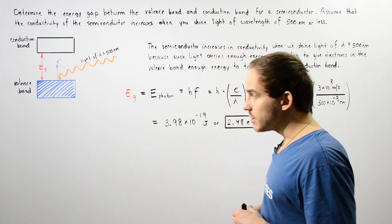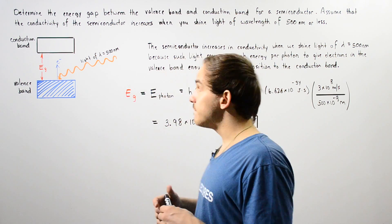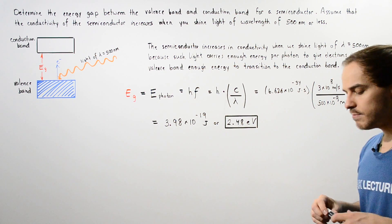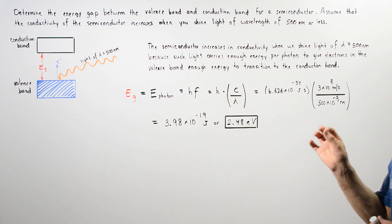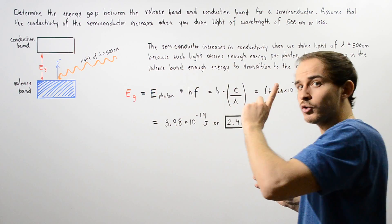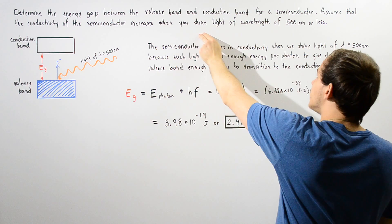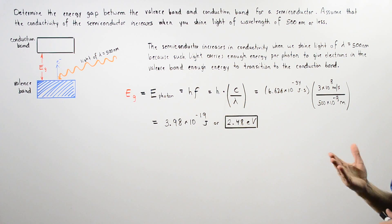So determine the energy gap value that exists between our valence band and our conduction band inside a certain semiconductor. Assume that the electric conductivity of the semiconductor only increases when we shine light of a wavelength of 500 nanometers or less.